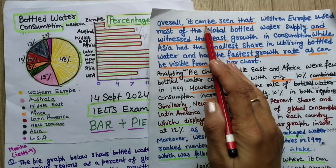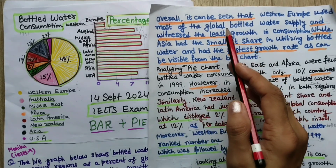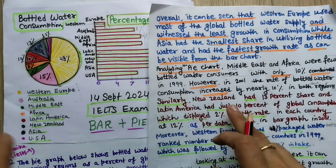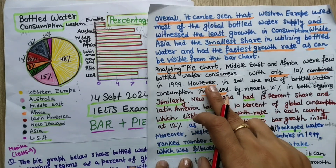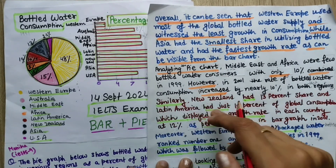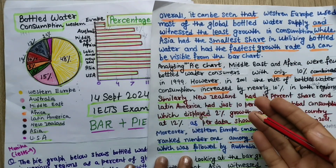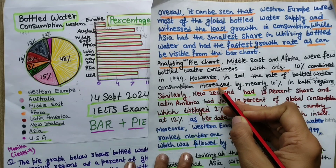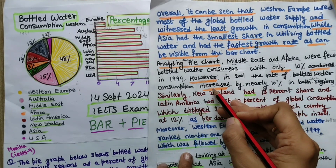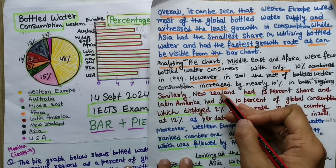I have shown my vocabulary here. Overall, it can be seen that — this is for compound sentences. These are connectors, contrastive words: however, while, in contrast, on the other hand. You can use these. I noticed that the word 'increased' was repeated 3-4 times, so I will be changing that word.